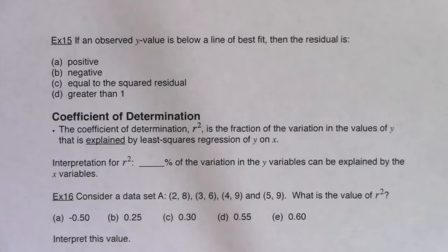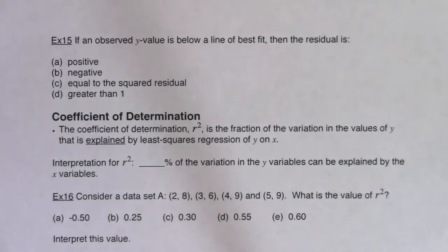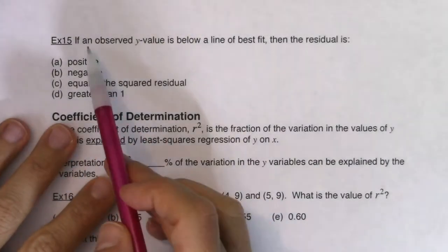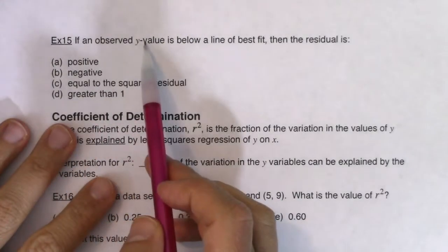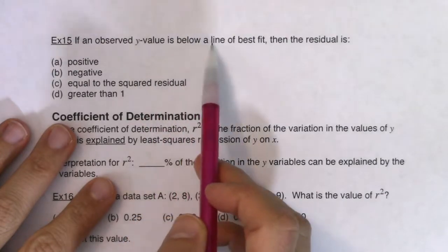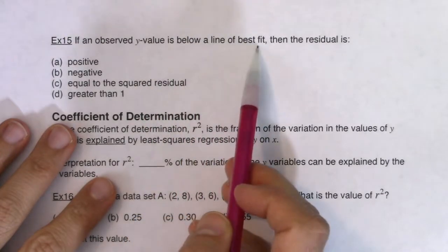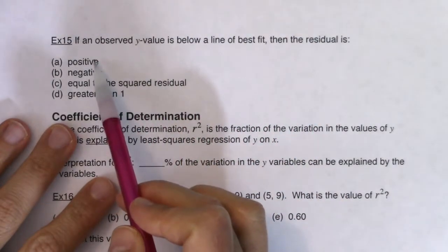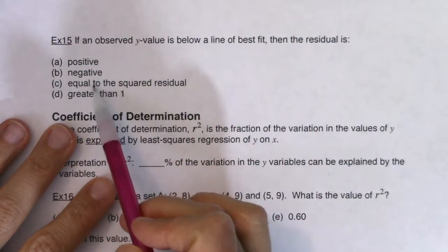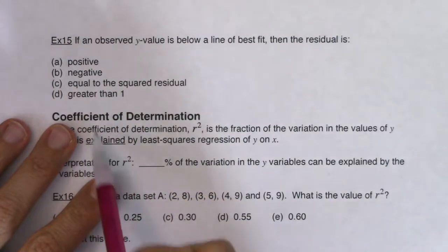Let's try a multiple choice question, and then we will get to r squared, the coefficient of determination. For example 15: if an observed y value is below a line of best fit, then the residual is positive, negative, equal to the squared residual, or greater than 1?